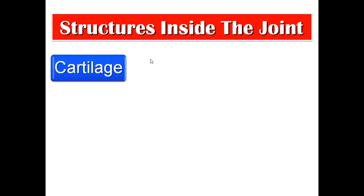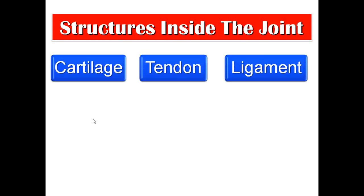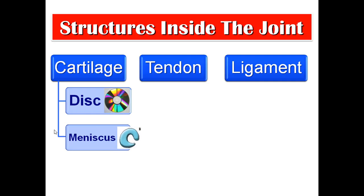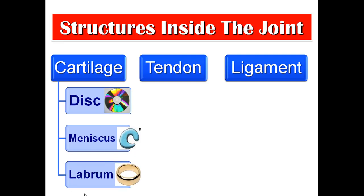Structures inside the synovial joint — not all synovial joints, but some of them — include three types: cartilage, tendon, and ligament. The cartilage inside may be an articular disc, a meniscus (semilunar cartilage), or a labrum (ring). The tendon examples include the popliteus tendon in the knee joint and the long head of biceps in the shoulder joint. The famous ligaments are the cruciate ligaments in the knee joint.